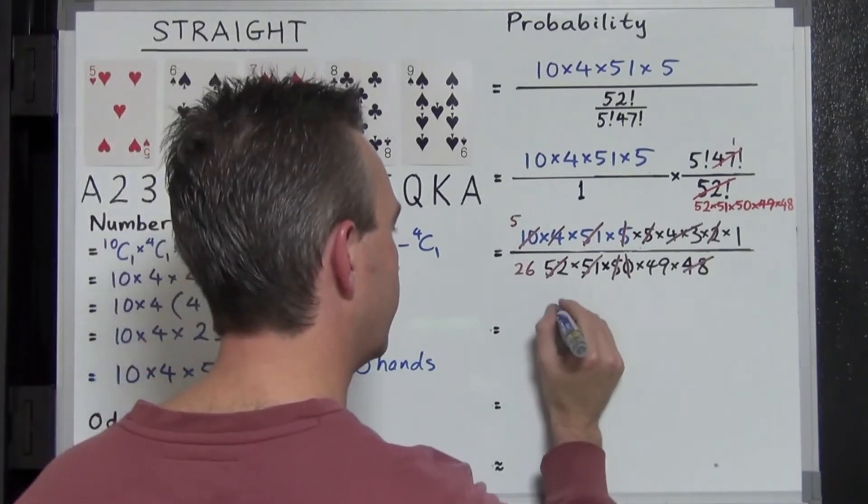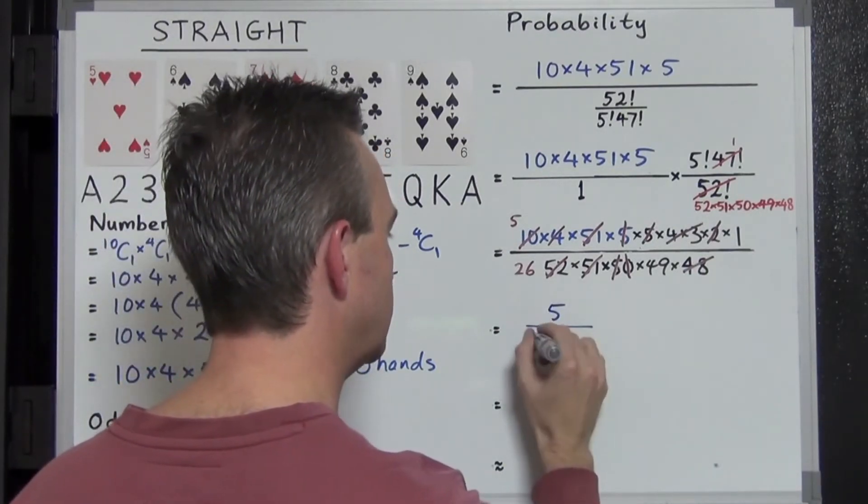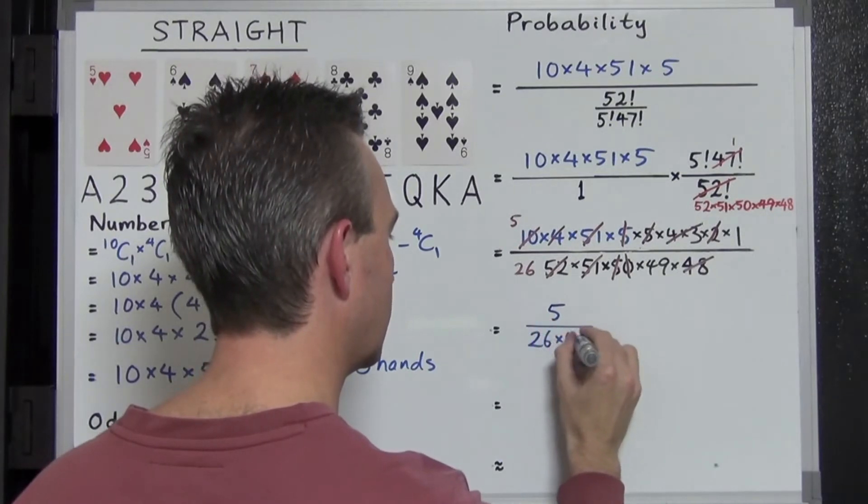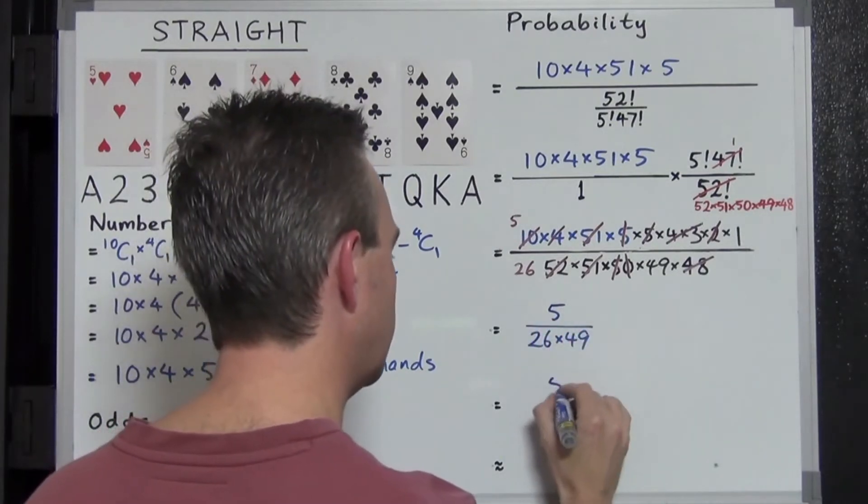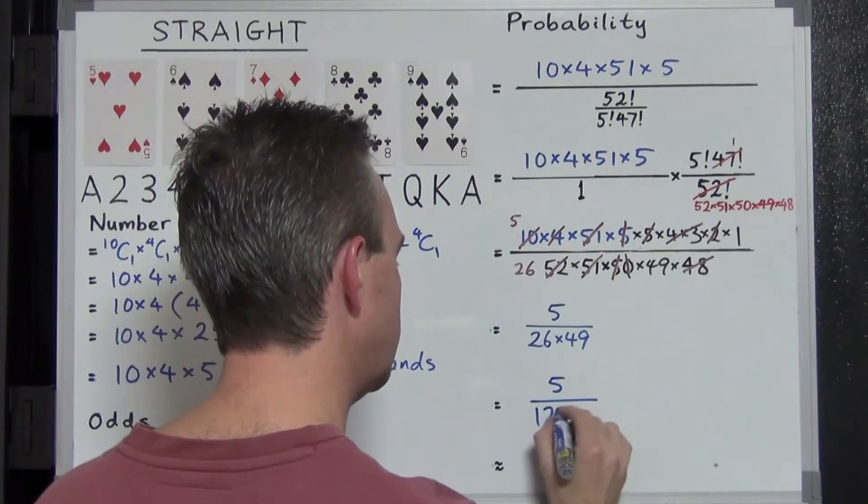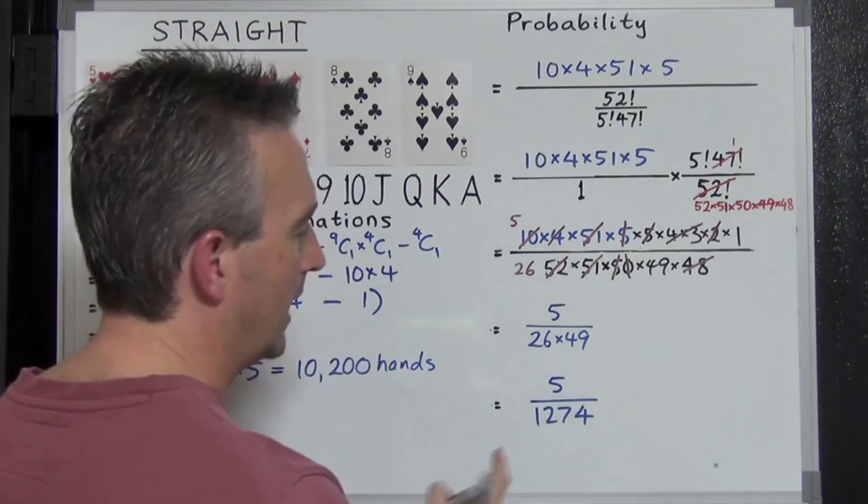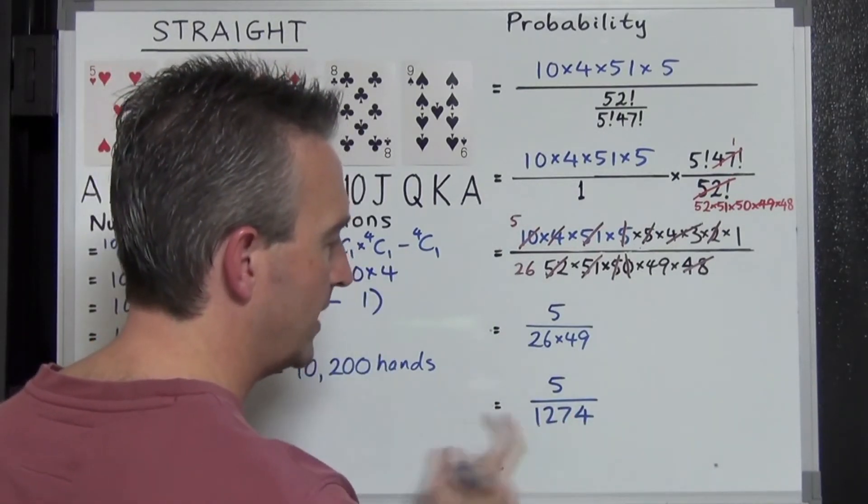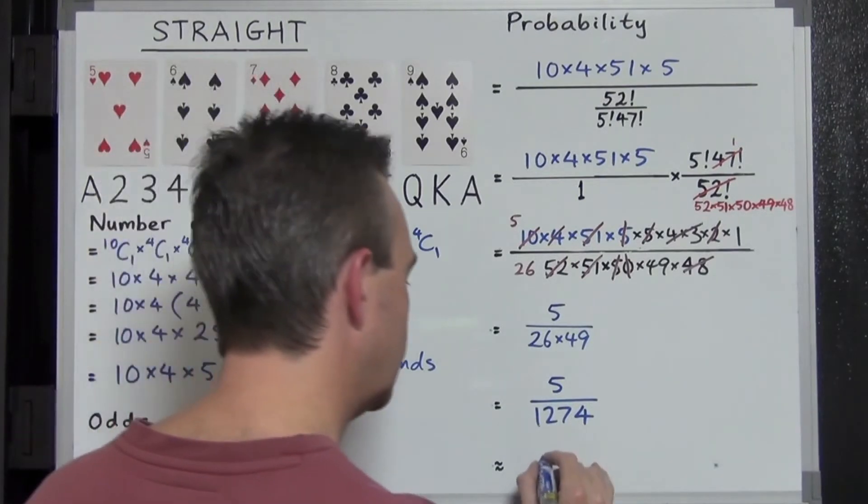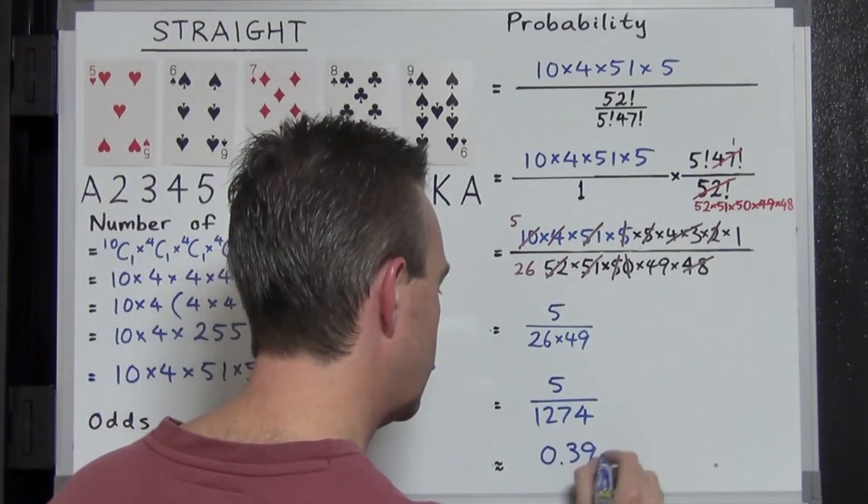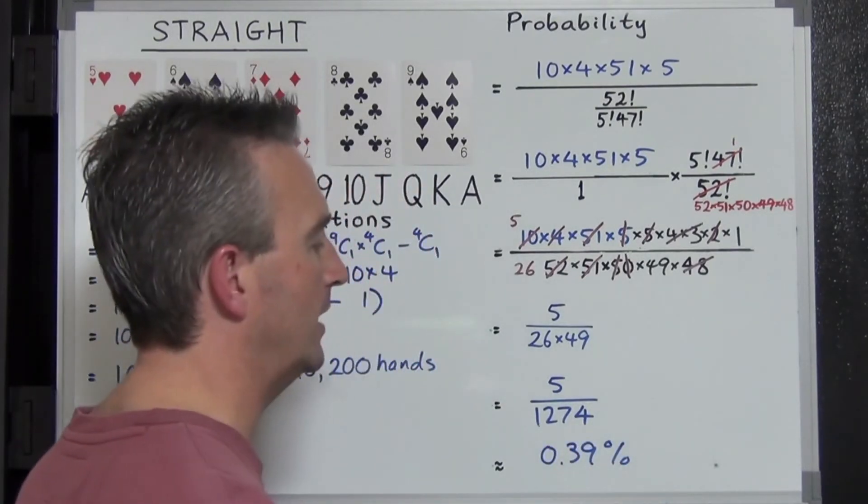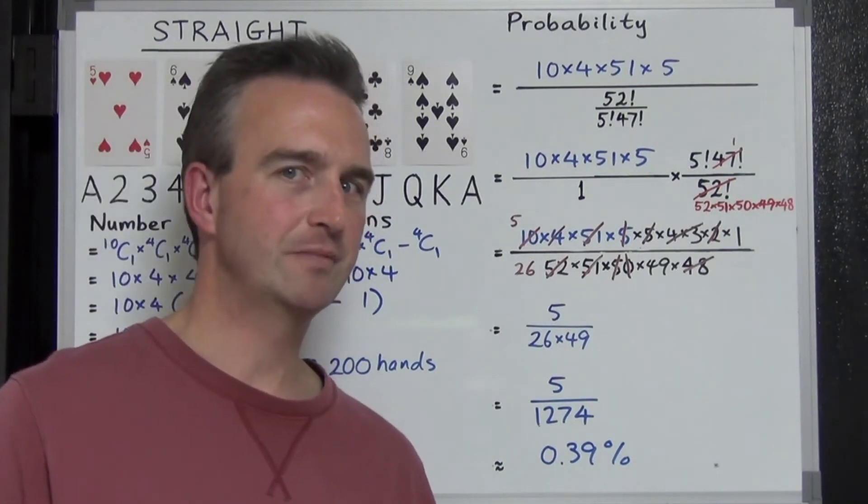Let's see what comes out there. 5 over 26 times 49. And that falls down to 5 over 1,274. Upon dividing 5 by 1,274, we get 0.39% after we multiply by 100. Less than 1%. Pretty rare.